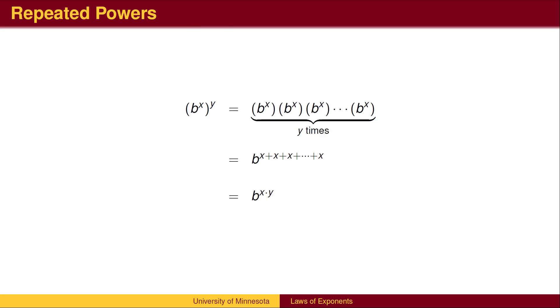When we put an exponent on an expression with an exponent, we are repeatedly multiplying the expression inside the parentheses by itself. b to the x to the y is y copies of b to the x, which means we need to add y copies of x, which is multiplying x and y.